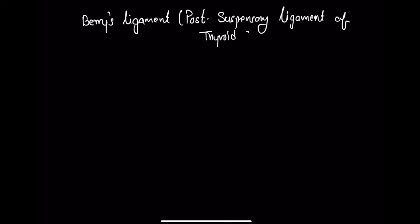This video is about Berry's ligament, also known as the posterior suspensory ligament of the thyroid gland. This ligament connects the thyroid gland with the cricoid cartilage, and sometimes with the first and second tracheal rings.